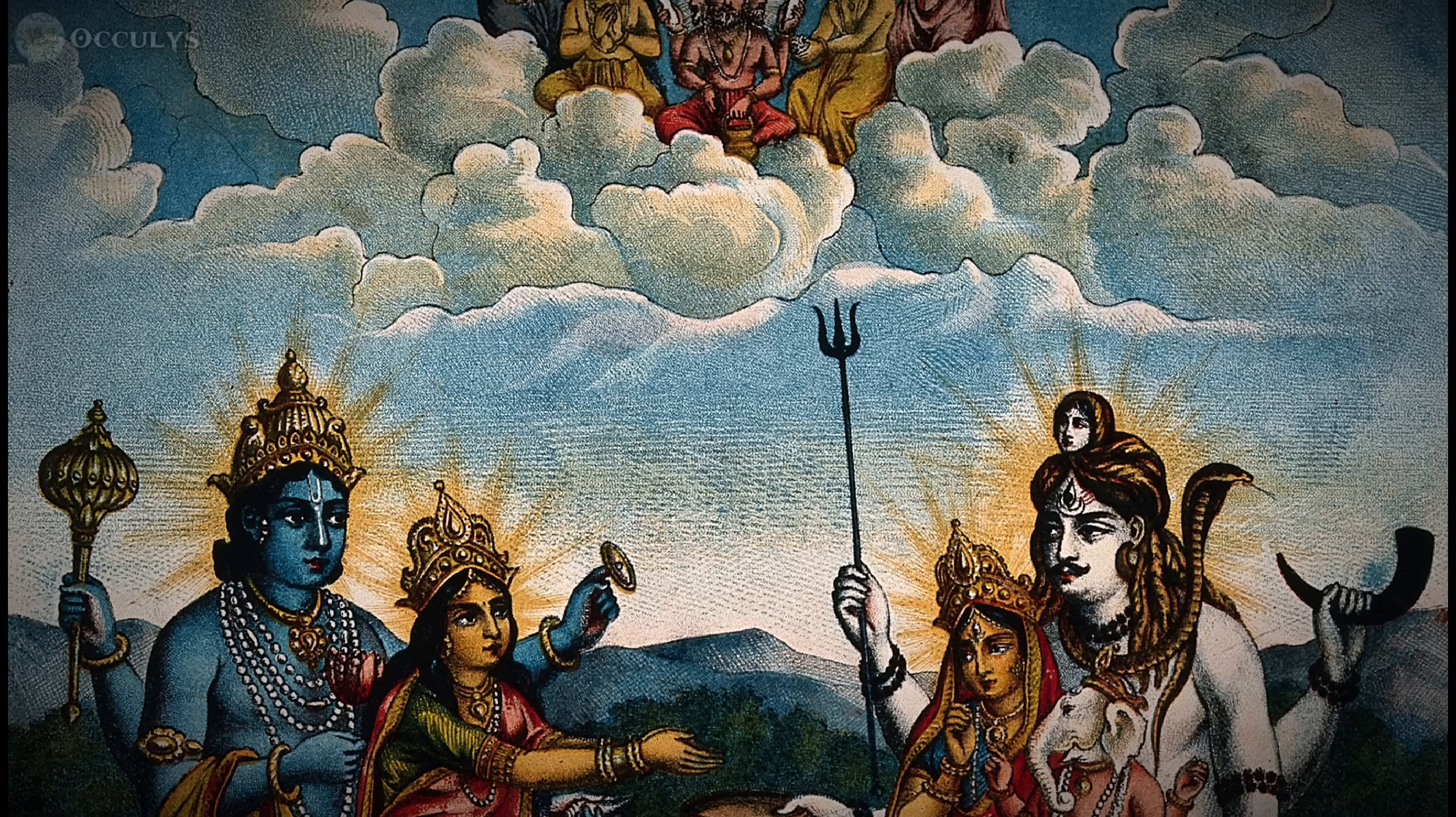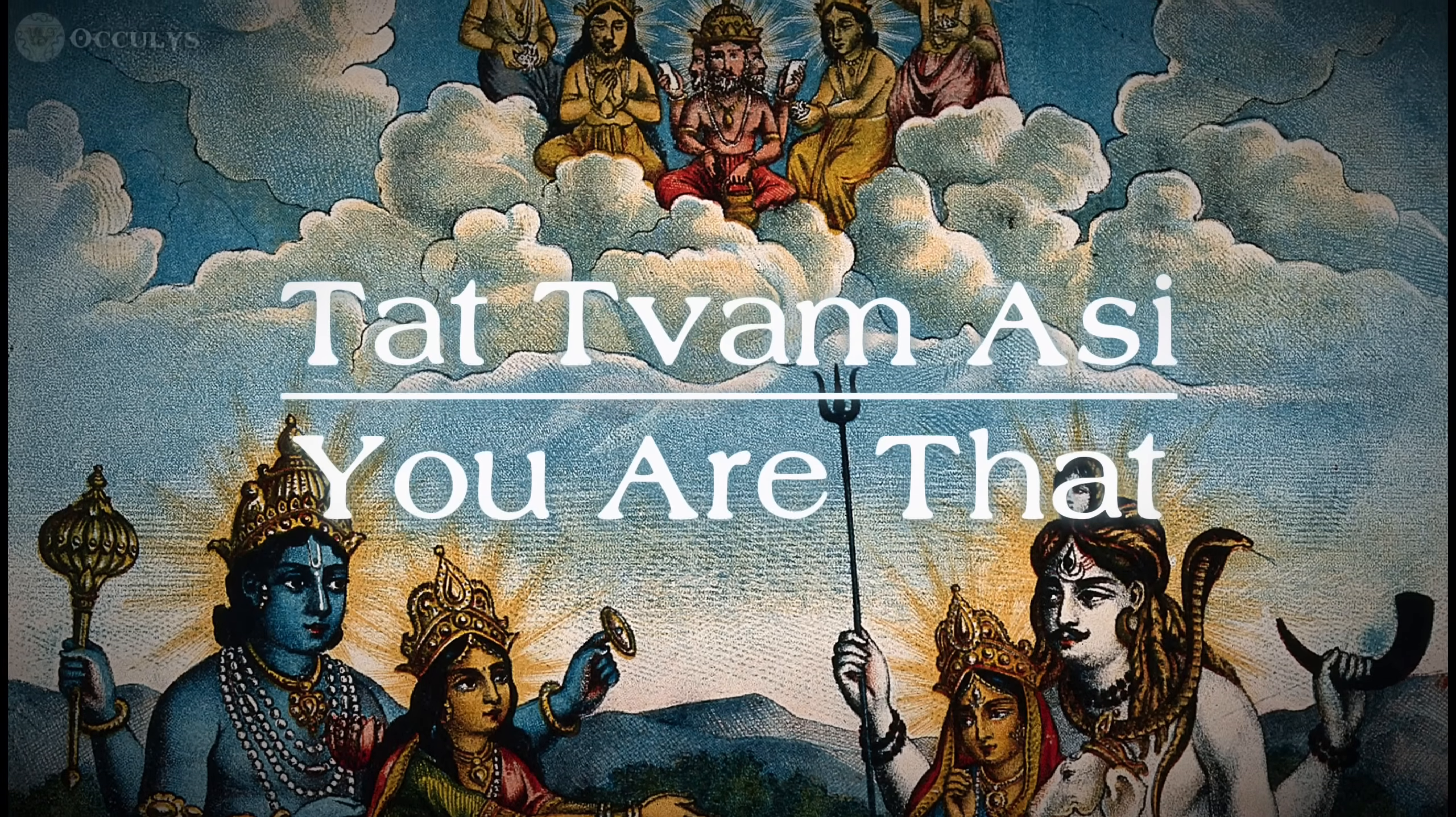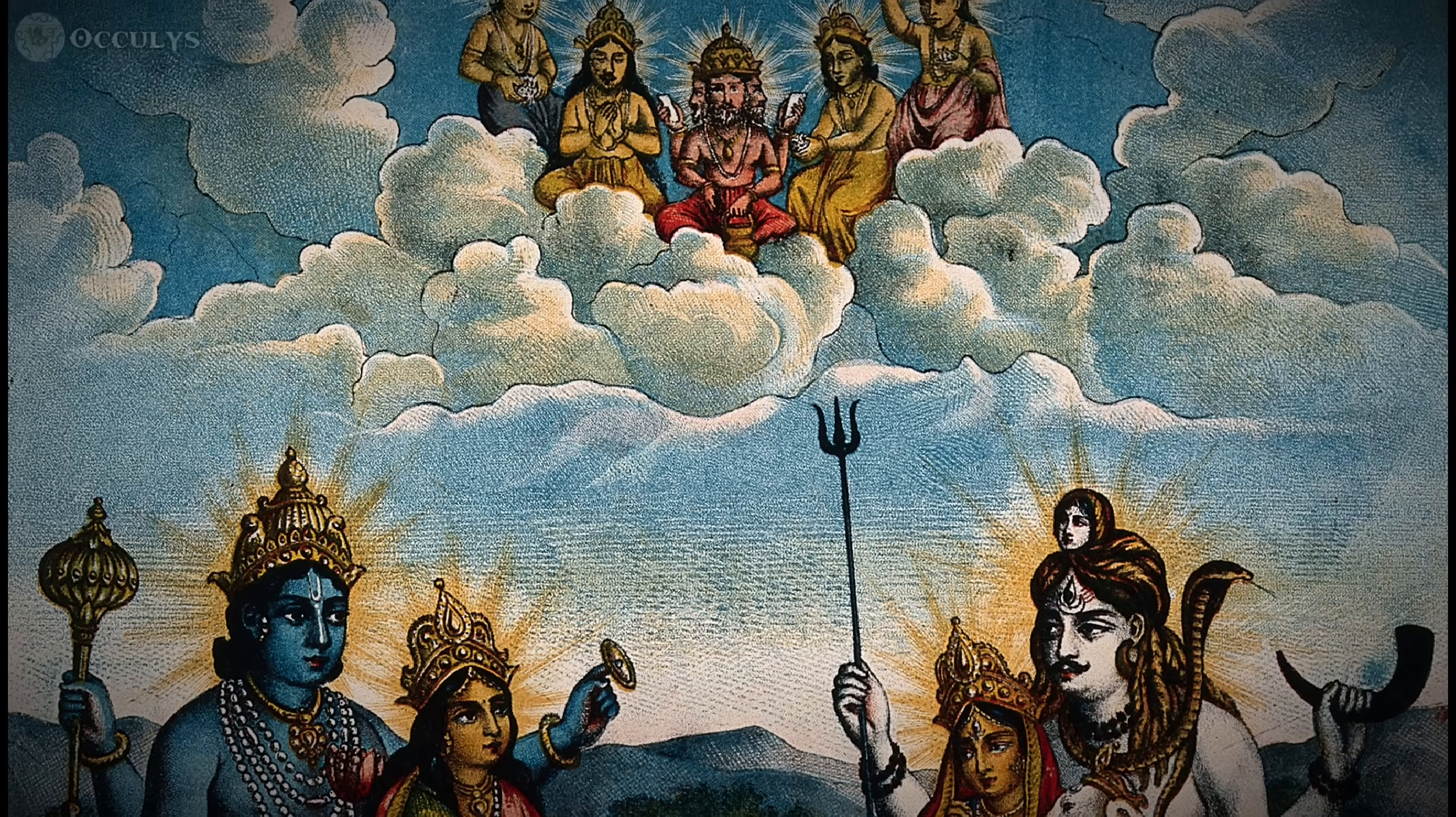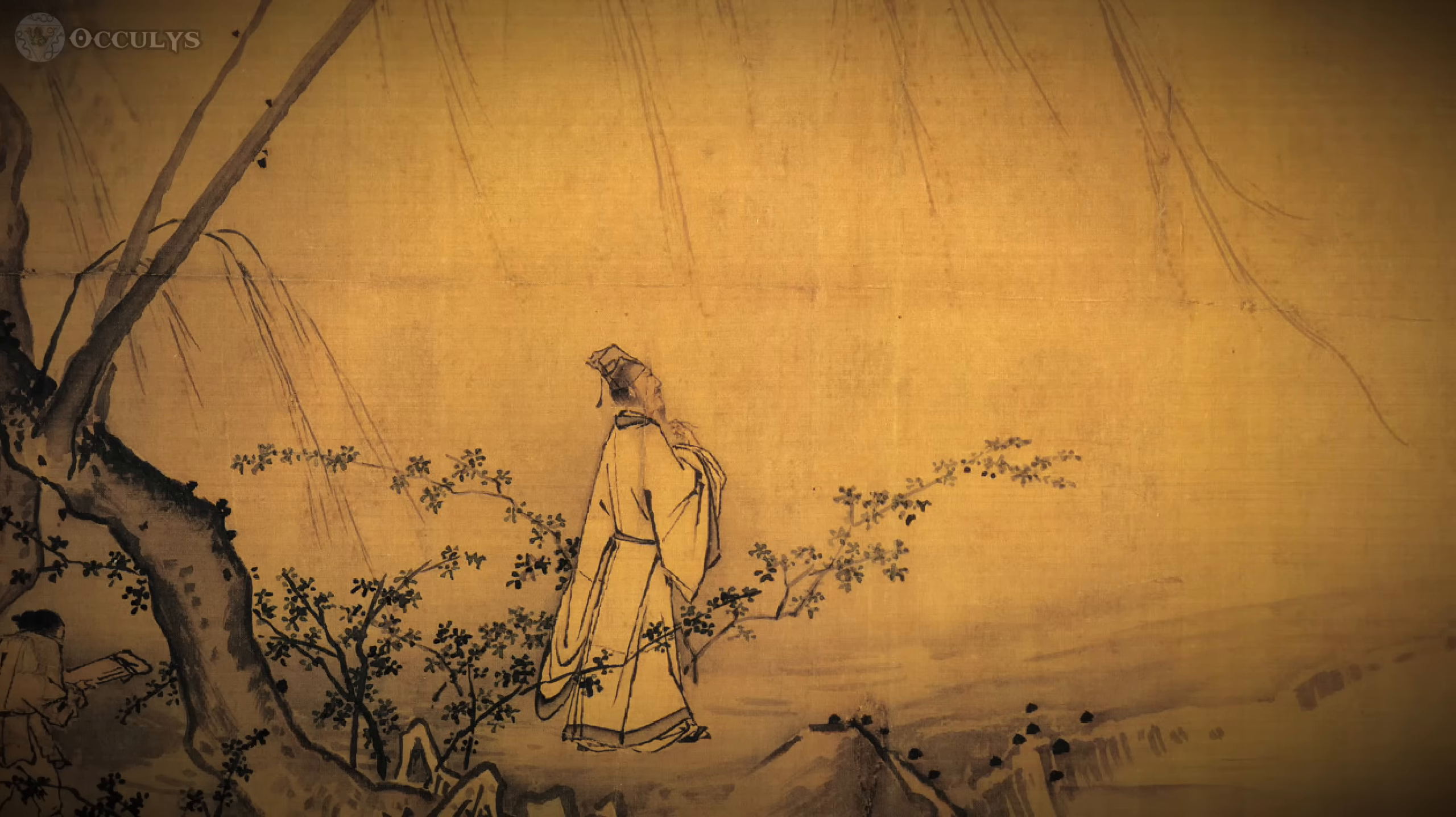The famous Sanskrit aphorism, Tat Tvam Asi, captures this idea perfectly, positing a complete identity between the individual and the universal. Likewise, in Taoism, the Tao is the natural, intelligent, and spontaneous ordering principle of the universe.